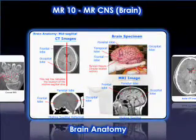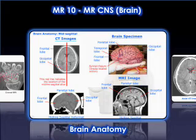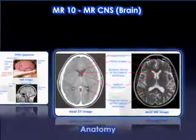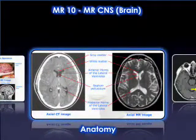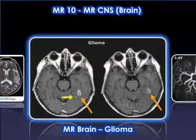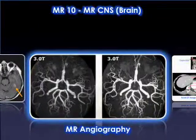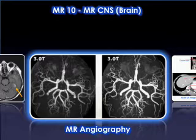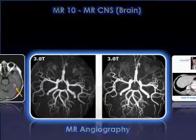The 10th module educates the participant on MR of the central nervous system. It reviews the day-to-day practice of MR imaging of the brain, defines proper imaging protocols for brain imaging including the MR appearance and characteristics of various brain lesions, and covers how MRI can be used to assess blood flow in vessels of the head and neck, applying various vascular techniques to acquire MRA studies of the brain, blood flow, perfusion, and diffusion.